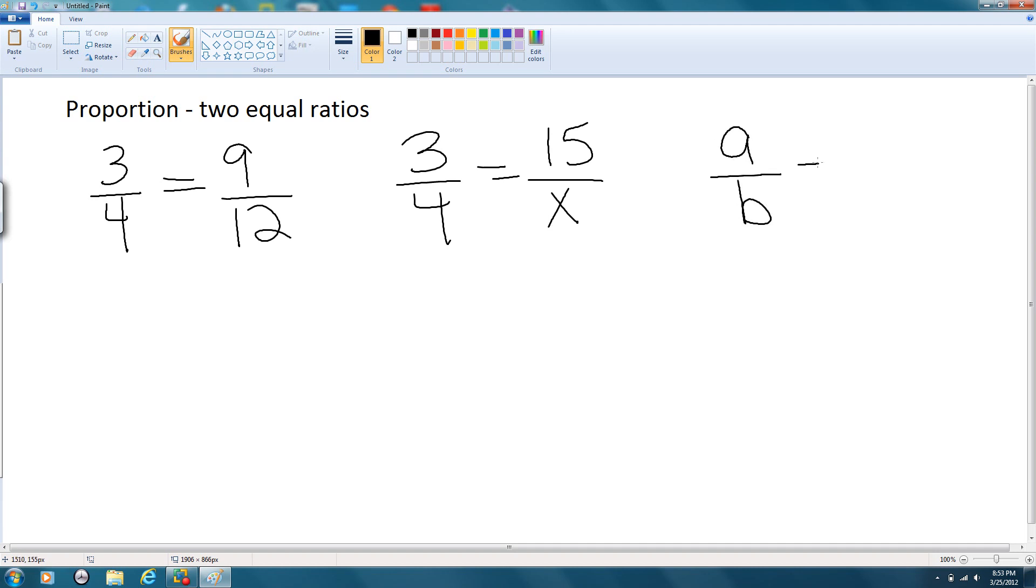Cross products is this idea: A over B, if A over B is equal to C over D, then AD is equal to CB. Cross products.